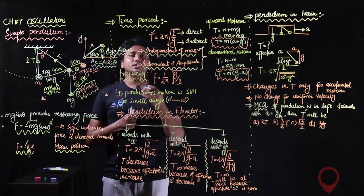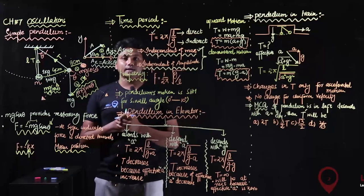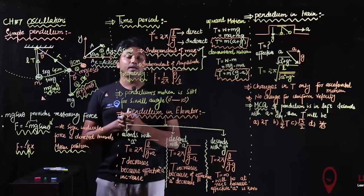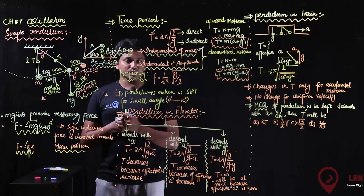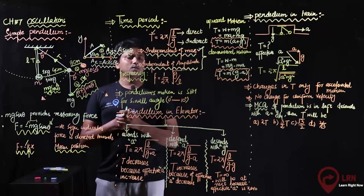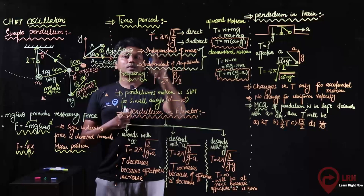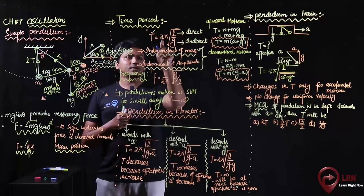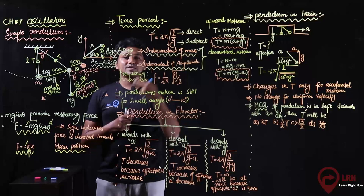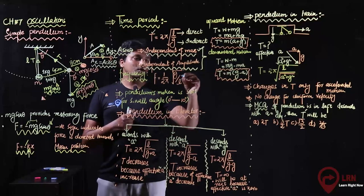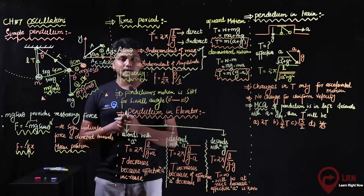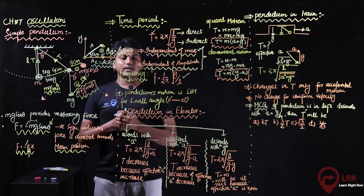After that, if we look at frequency and its relation to time period, we know that time period and frequency are reciprocals of each other. So frequency f = 1/T, and if you reverse it, you get the frequency formula. If time period is 2π√(L/g), then frequency will be its reciprocal.